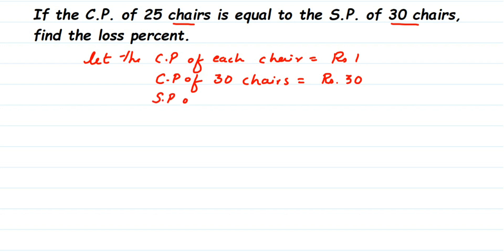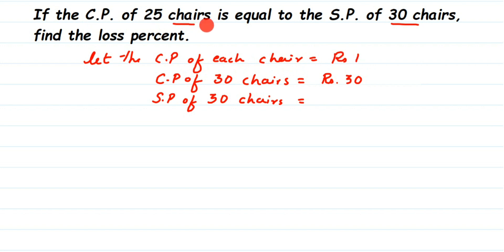Now let's find out the selling price of 30 chairs. I've taken 30 chairs — not 25 — because I want to get the selling price of 30 chairs to compare. Looking at the question, the selling price of 30 chairs equals the cost price of 25 chairs. The cost price of 25 chairs is ₹25, since each chair is ₹1. So the selling price of 30 chairs equals ₹25. Now we can compare, since the number of chairs is the same.